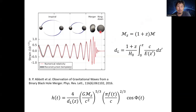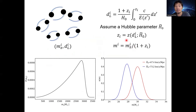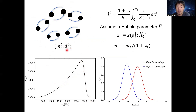We want to use the PBH mass function combined with the merger rate of PBH binaries to probe the Hubble parameter. From the gravitational waveform, we know the redshifted mass and the luminosity distance, but to know the Hubble parameter, we need to know the redshift. In our future observations, we can observe a number of PBH binaries at high redshift. For each binary, we have the redshifted mass and the luminosity distance, giving us a distribution of redshifted mass. For the luminosity distance, we know its relation with the Hubble parameter via an equation. Once we know the redshift we know the Hubble parameter, but we don't know the redshift.